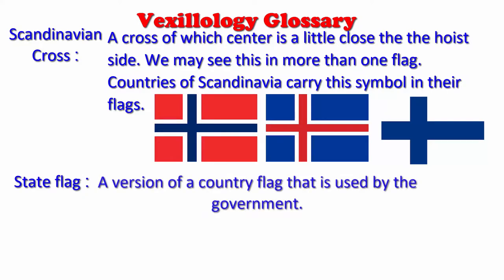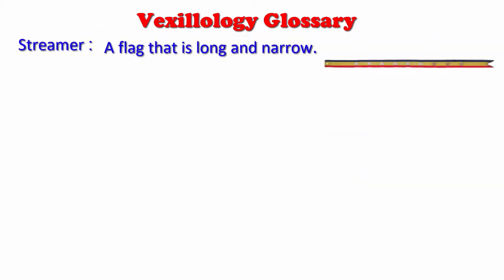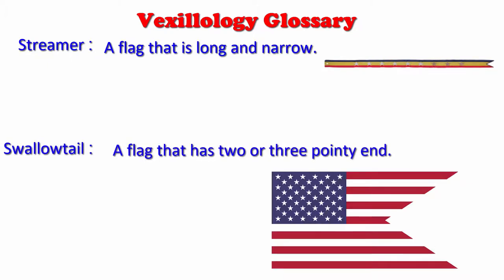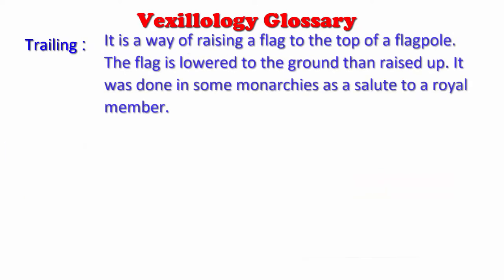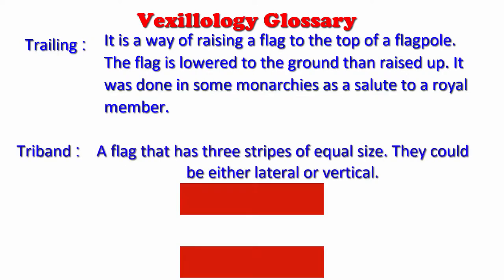State flag: a version of a country's flag that is used by the government. Streamer: a flag that is long and narrow. Swallowtail: a flag that has two or three pointy ends. Trailing: a way of raising a flag to the top of a flagpole where the flag is lowered to the ground then raised up. It was done in some monarchies as a salute to a royal member. Tri-Band: a flag that has three stripes of equal size, either lateral or vertical.